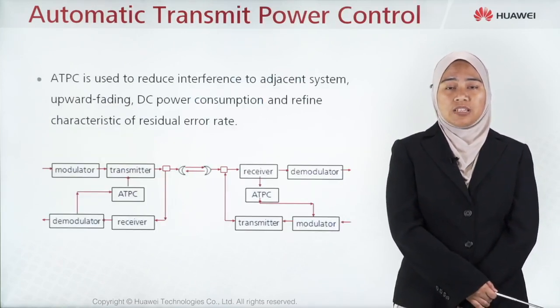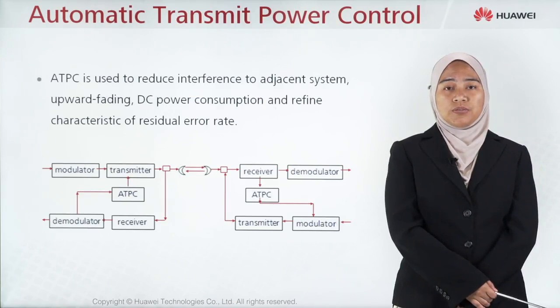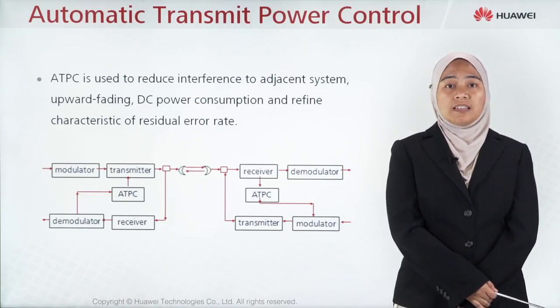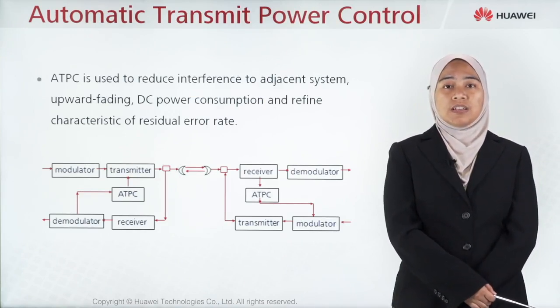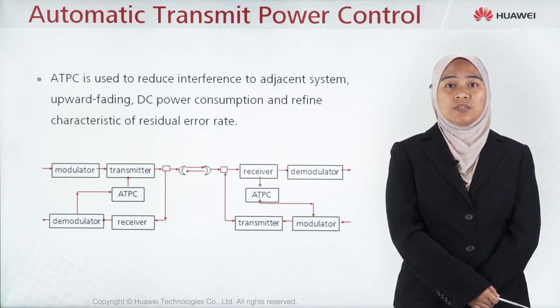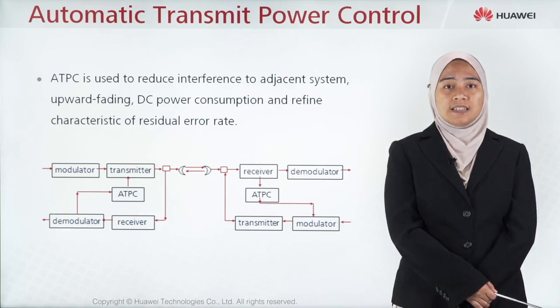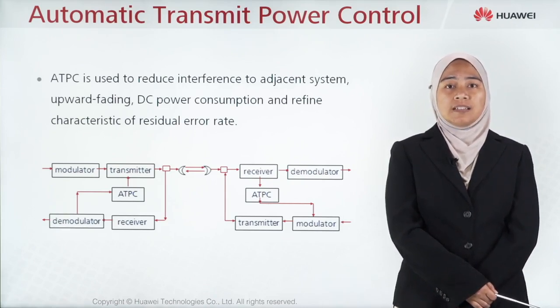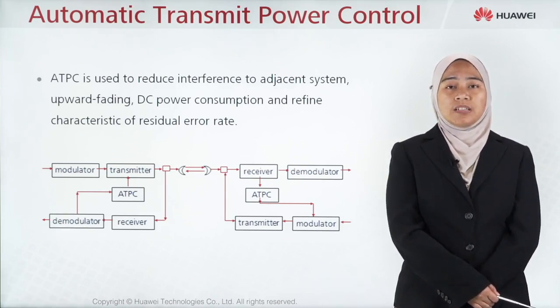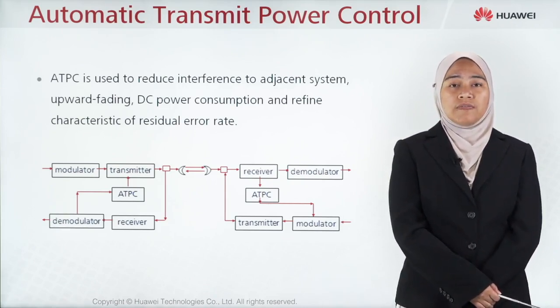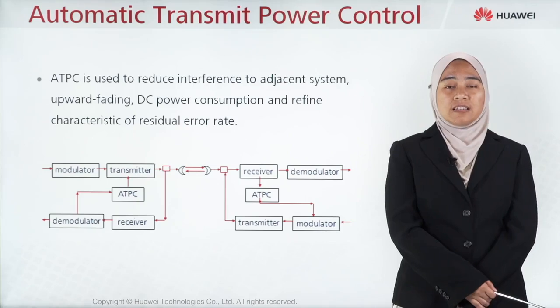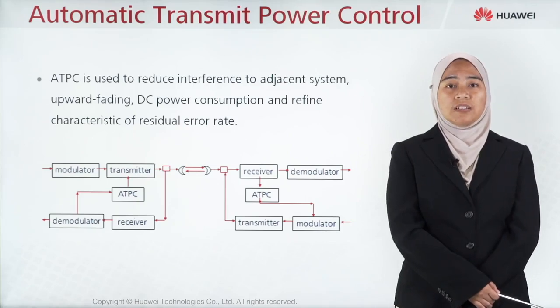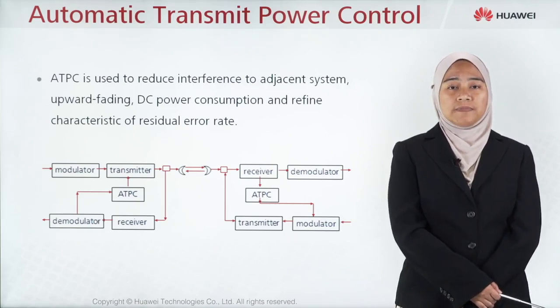Automatic transmit power control, ATPC, is used to reduce the interference to adjacent systems, upward fading, DC power consumption, and to refine the characteristics of the residual error rate.